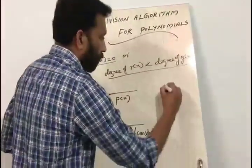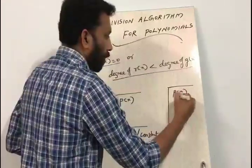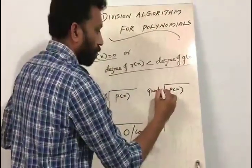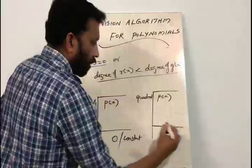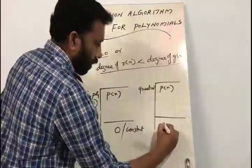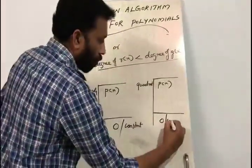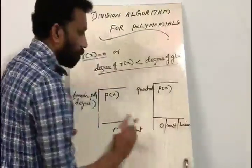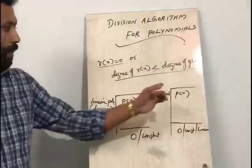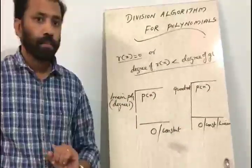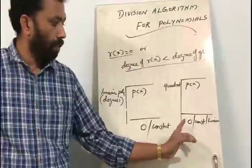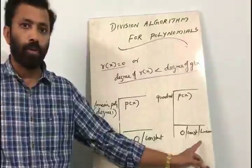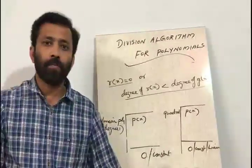Similarly, if we divide a polynomial by a quadratic polynomial, then the remainder can be 0, or a linear polynomial, or a constant. Similarly, if we divide a polynomial by a cubic polynomial, the remainder can be 0, or a constant polynomial, or a linear polynomial, or a quadratic polynomial.